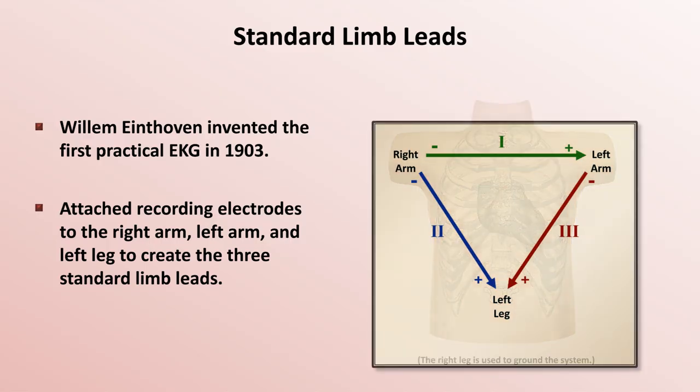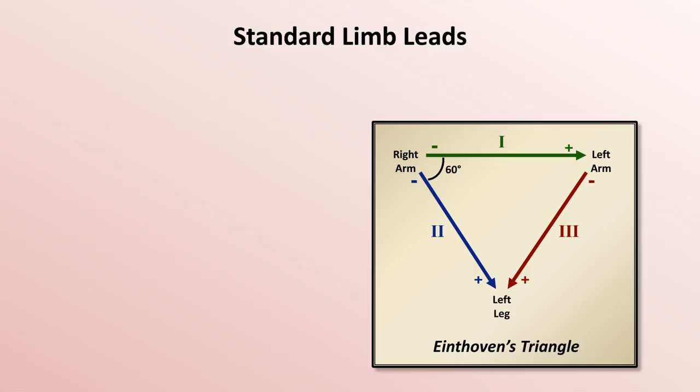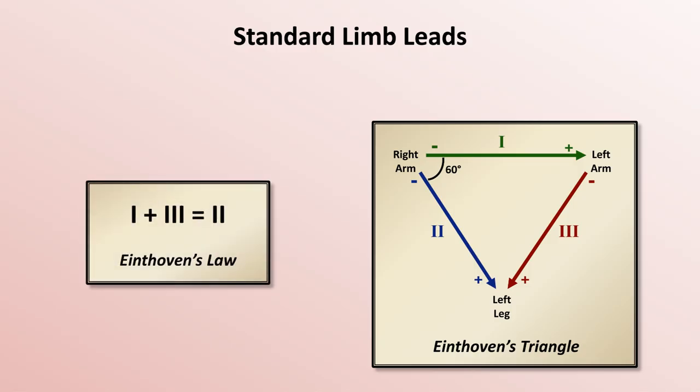In fact, this triangle is so important that it is given a specific name, Eindhoven's Triangle. And Eindhoven's Triangle demonstrates an important relationship called Eindhoven's Law. It is usually stated simply as lead 1 plus lead 3 equals lead 2.